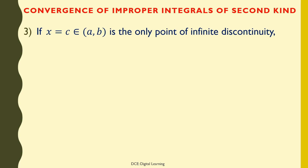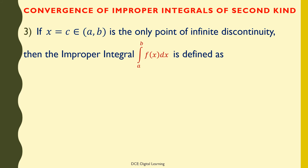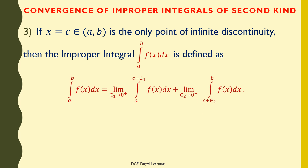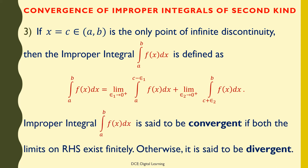If x = c is the only point of infinite discontinuity and c is an interior point of [a,b], then the improper integral of f(x) dx from a to b is defined as the limit of the integral of f(x) dx from a to c − ε₁ as ε₁ tends to 0 from the right, plus the limit of the integral of f(x) dx from c + ε₂ to b as ε₂ tends to 0 from the right. This improper integral is convergent if both limits exist finitely; otherwise, it is divergent.